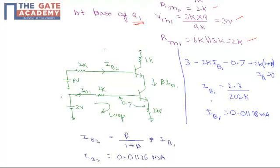We need to find the value of IB1. IB1 will be 2.3 divided by 202kΩ. By simplifying, IB1 equals 0.01138 milliamps.